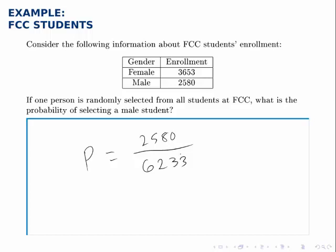So that's the probability, and written as a decimal that's approximately 0.414.